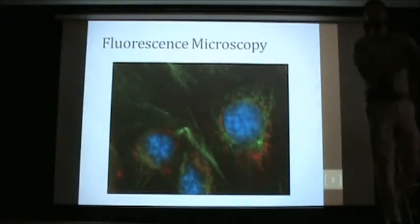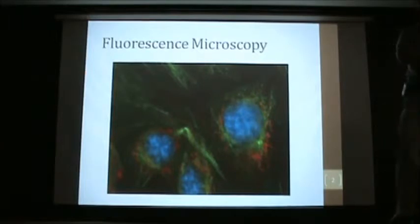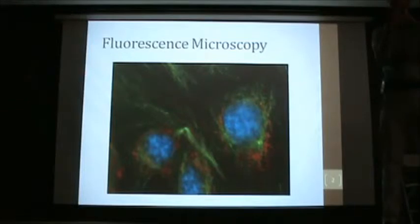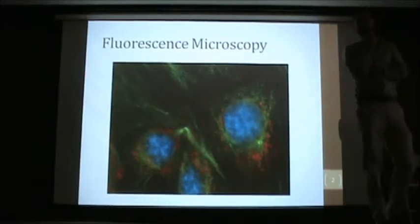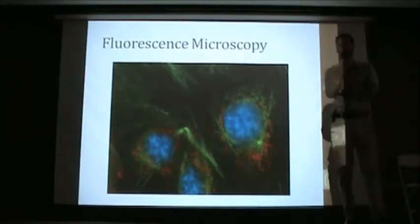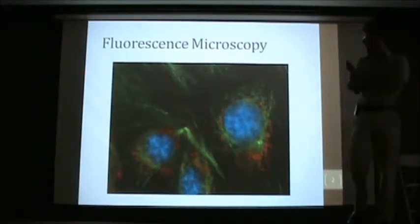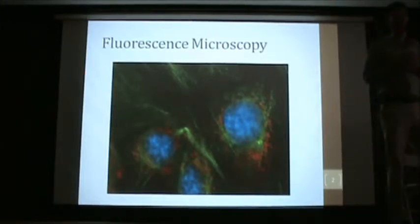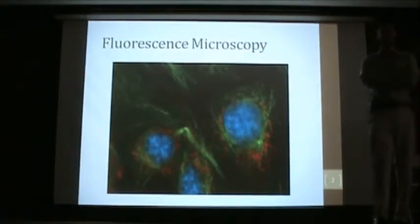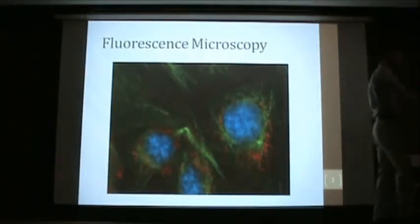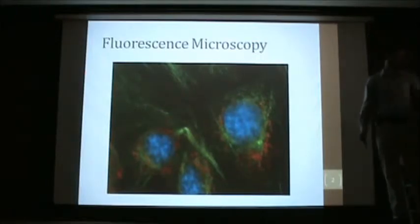So with fluorescent microscopy, you take some sort of fluorescent molecule and attach it to a certain portion of your sample that's of interest to you, and you get pretty pictures like this. This is an MDCK cell — Madin-Darby canine kidney cell — with the DNA stained in blue, the microtubules stained in green, and the mitochondria stained in red. So let's talk about how to get a picture like this.